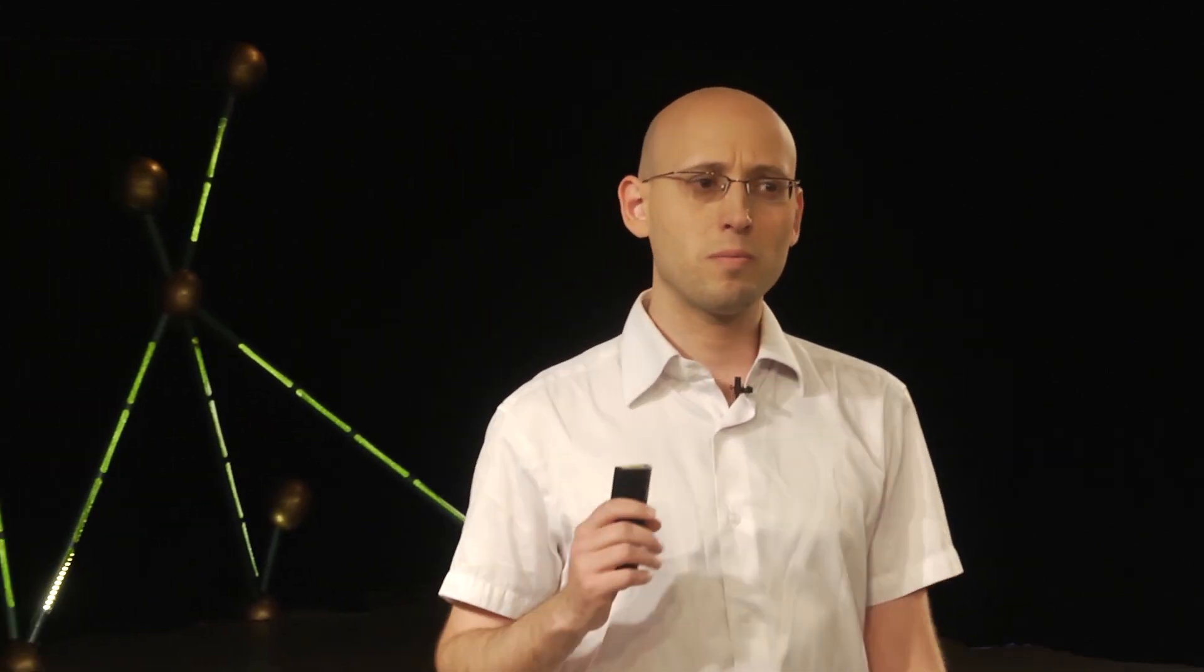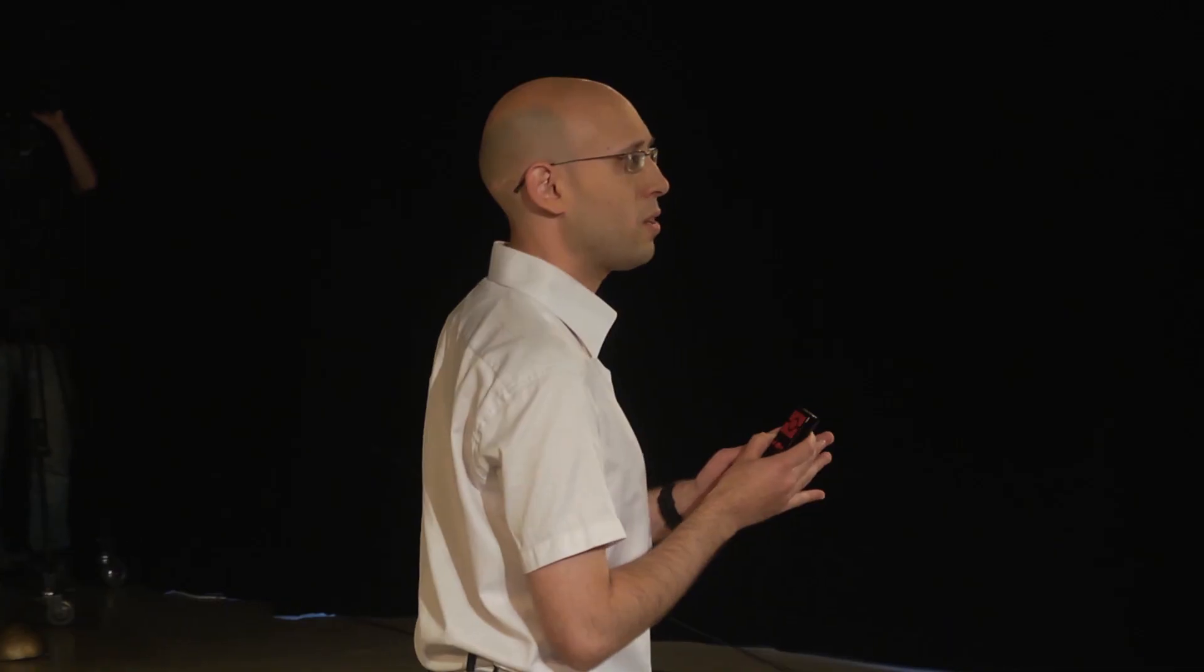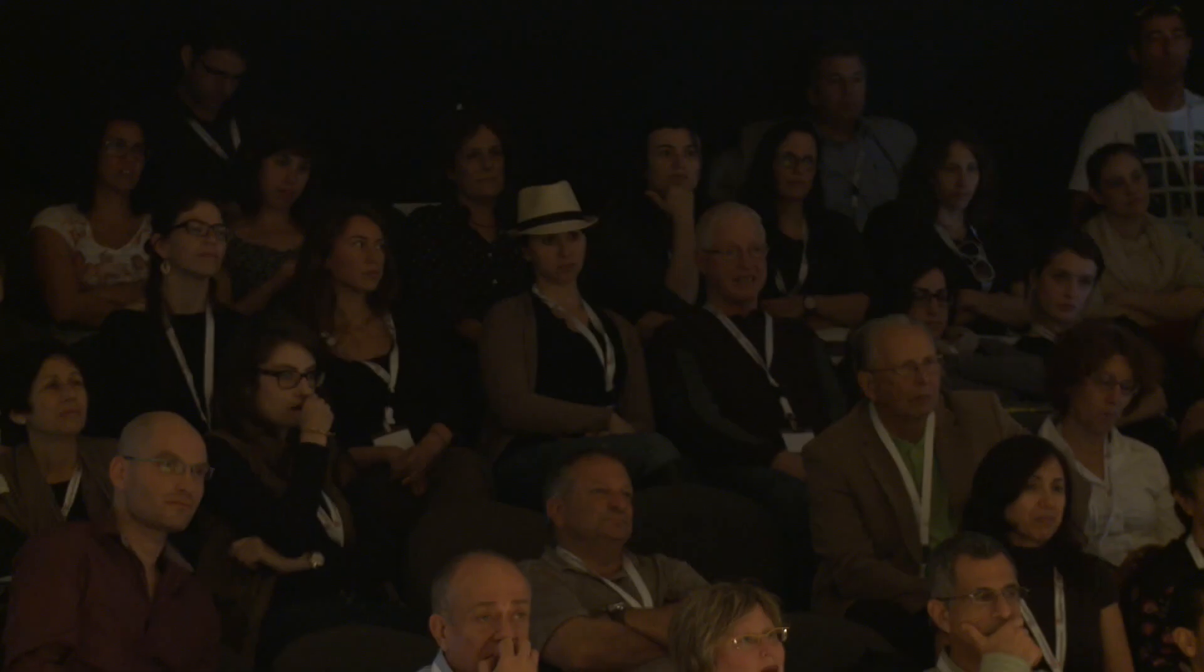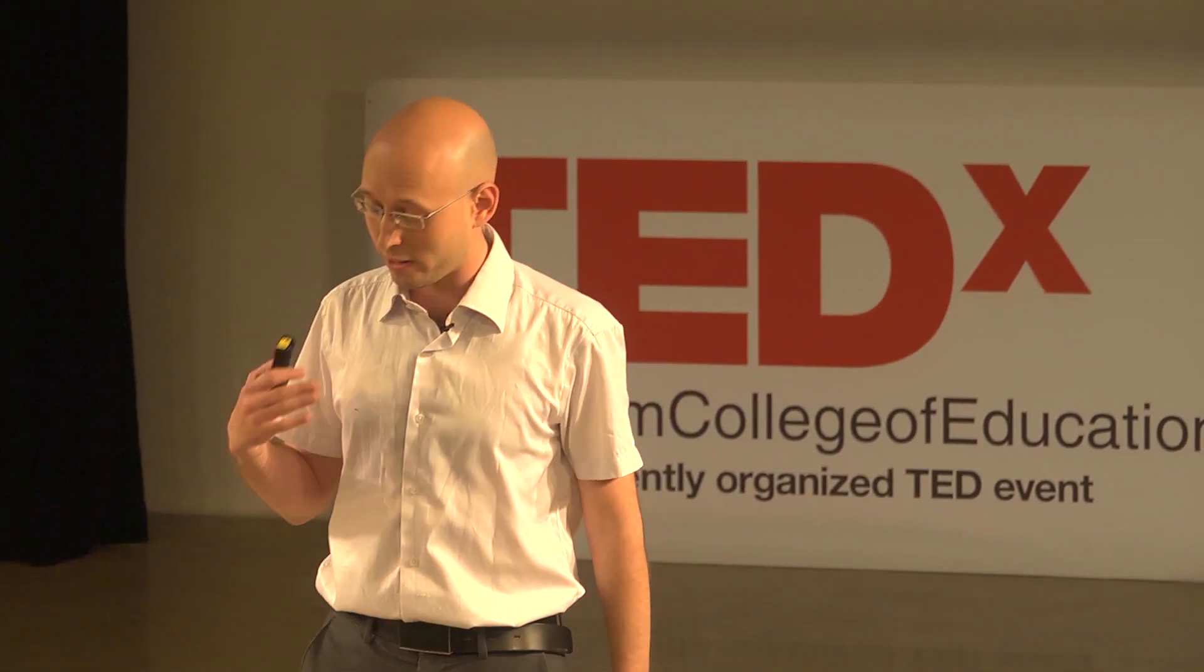Ten years from now, Omer is 11 years old. I watch him sleep and I smile. Why am I smiling? Because he is not schizophrenic. You see, in the next five years, genetic sequencing is going to cost less than a thousand dollars. That means you can read the entire genetic code of a human being for a measly sum of money. Omer is going to have his entire genetic code sequenced, and it turns out Omer is prone to schizophrenia. But he hasn't had an episode yet.